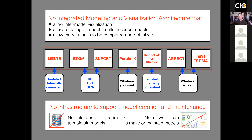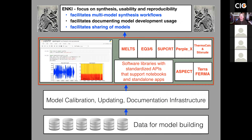So what did we do? We decided to attack this problem of inconsistency with the Enki Project. The Enki Project is one where we've created a standardized interface to all of the existing models and a standardized software interface for building and recalibrating the existing models to make them internally consistent with each other. The Enki Project involves creating the fundamental data resources for updating and maintaining the various models, building a calibration framework for updating and documenting them, and creating a comprehensive visualization framework for looking at results.